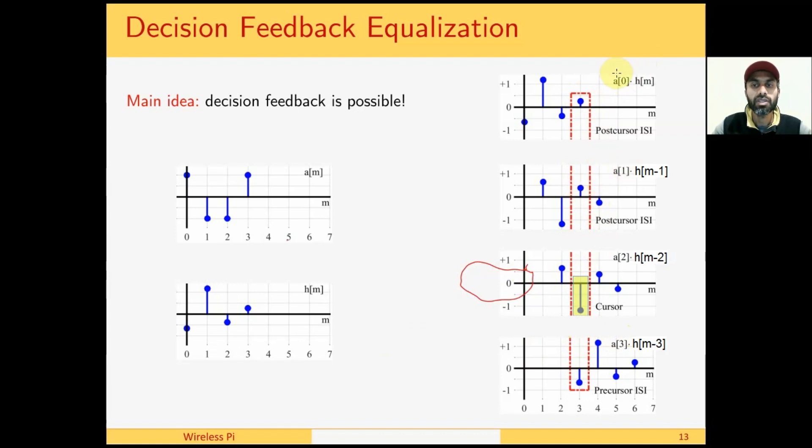However, we have already taken a decision on a(1) and a(0), which are past values. If the current time is m=2 and these past values are known, then their effect can be subtracted from the resultant sample at this point, which significantly reduces the ISI.